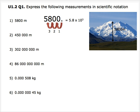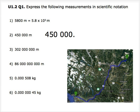An important point to note is that when the decimal point moves to the left, 10 is raised to a positive power. Question 2: we have 450,000 meters. We have to move the decimal point five times to the left, which gives us 4.5 times 10 to the power of 5.